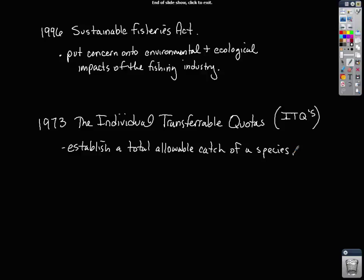Our case study is the Alaskan salmon. Since these quotas went into effect, the salmon population has rebounded — in fact it's above where it's ever been since they've been measuring the population. The Individual Transferable Quota system seems to be a great way of trying to maintain sustainable fishing.